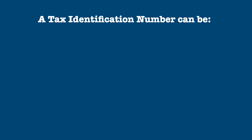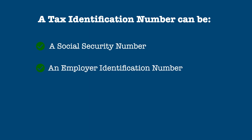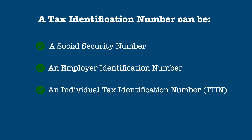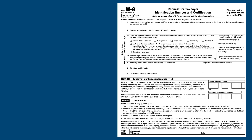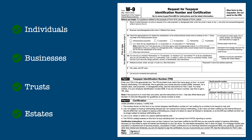A tax identification number can be a Social Security Number, an Employer Identification Number, an Individual Tax Identification Number, or ITIN, which is granted to individuals that do not qualify for Social Security Numbers, or an Adoption Tax Identification Number, which is granted to a foreign individual that is in the process of being adopted by a U.S. national. Forms W-9 might be requested from individuals, businesses, trusts, or estates.